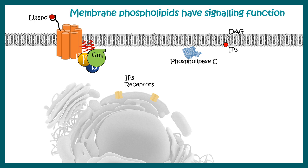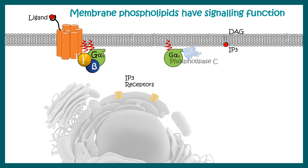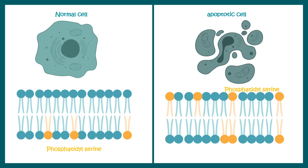Phospholipids not only form a protective bilayer but are also important for signal transduction. One example is G-protein coupled receptor signaling: upon ligand binding, the Gαq subunit activates phospholipase C, which cleaves PIP2 — a membrane phosphoinositide — into IP3. IP3 then binds to the IP3 receptor, leading to calcium elevation and downstream signaling. This illustrates that membrane phospholipids can also have a direct signaling function.